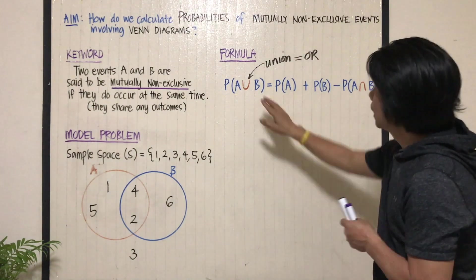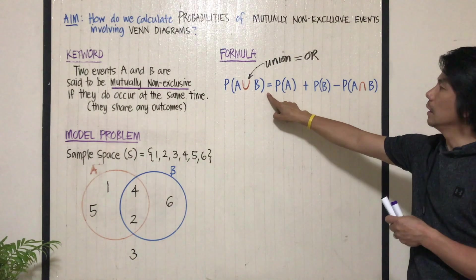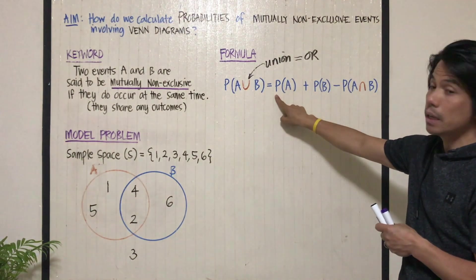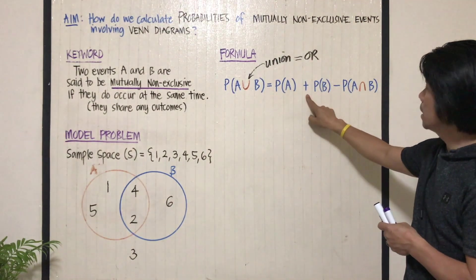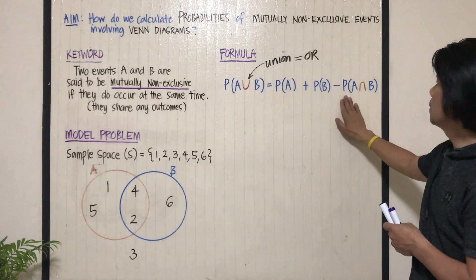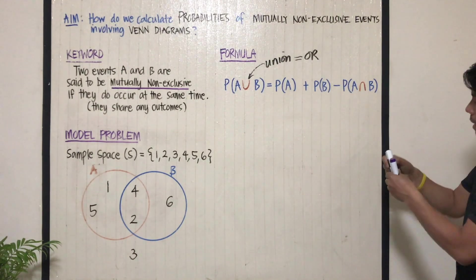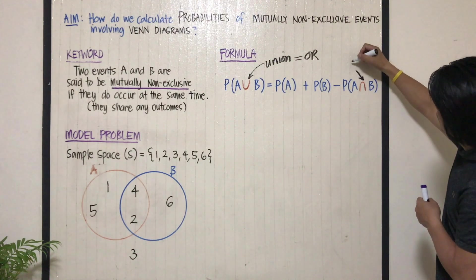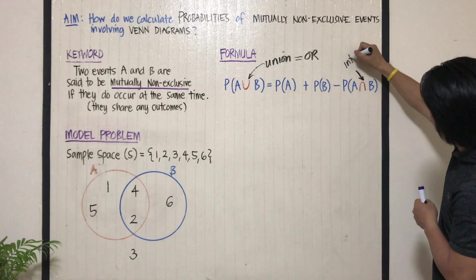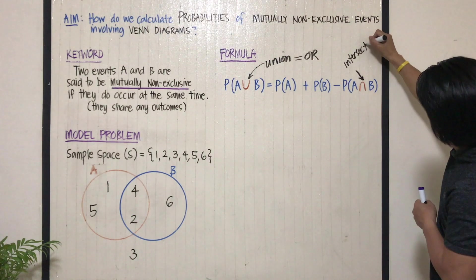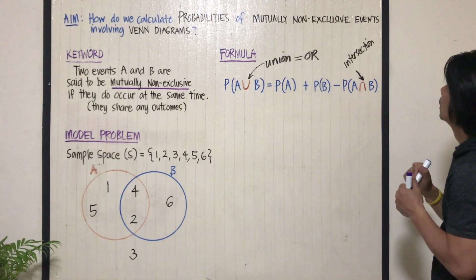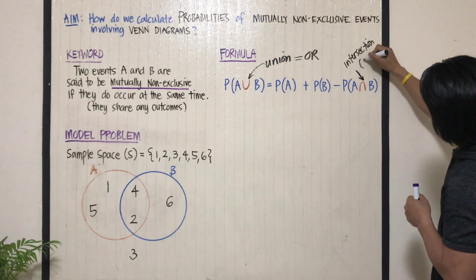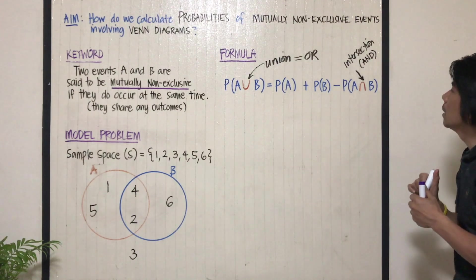They combine, and how do we find it? It's equal to the probability of A plus probability of B minus the probability of A, and this symbol means intersection. Intersection, or and.